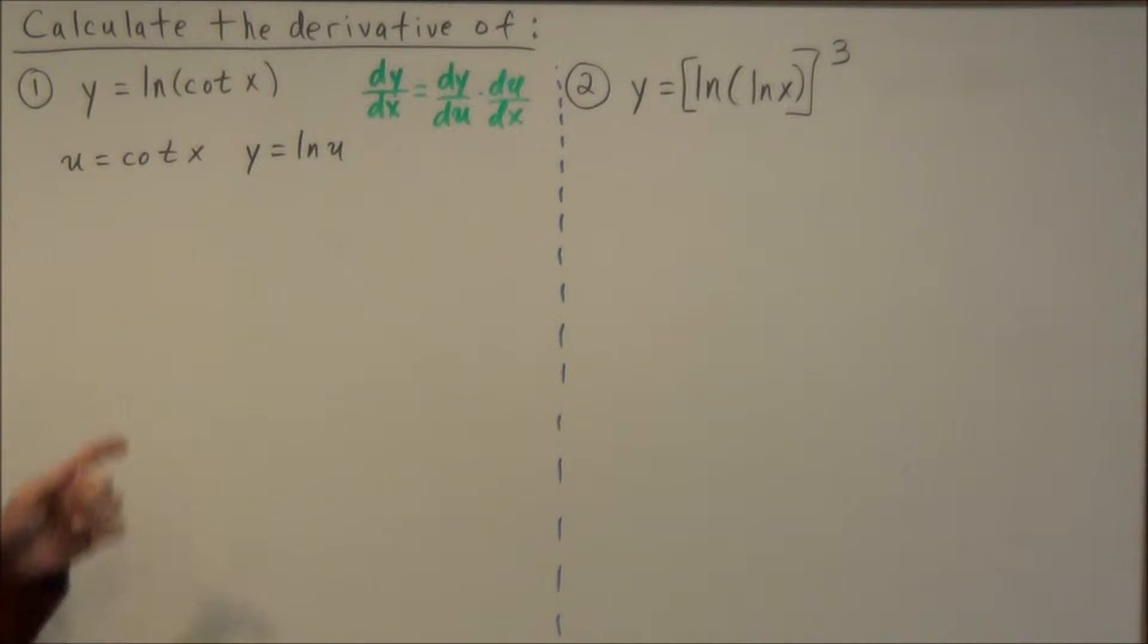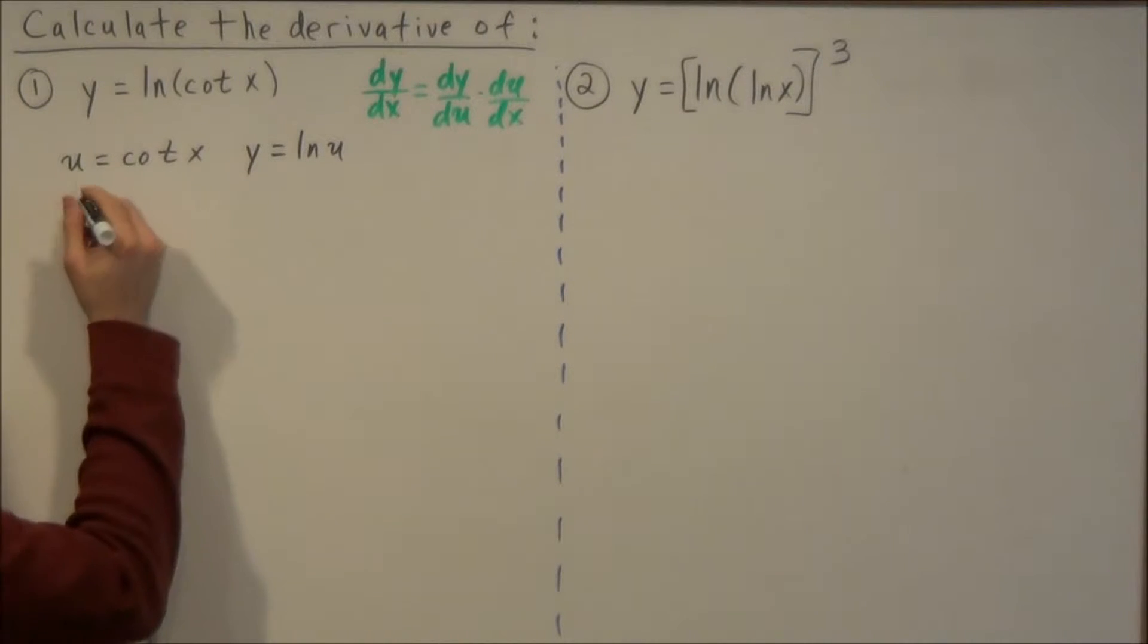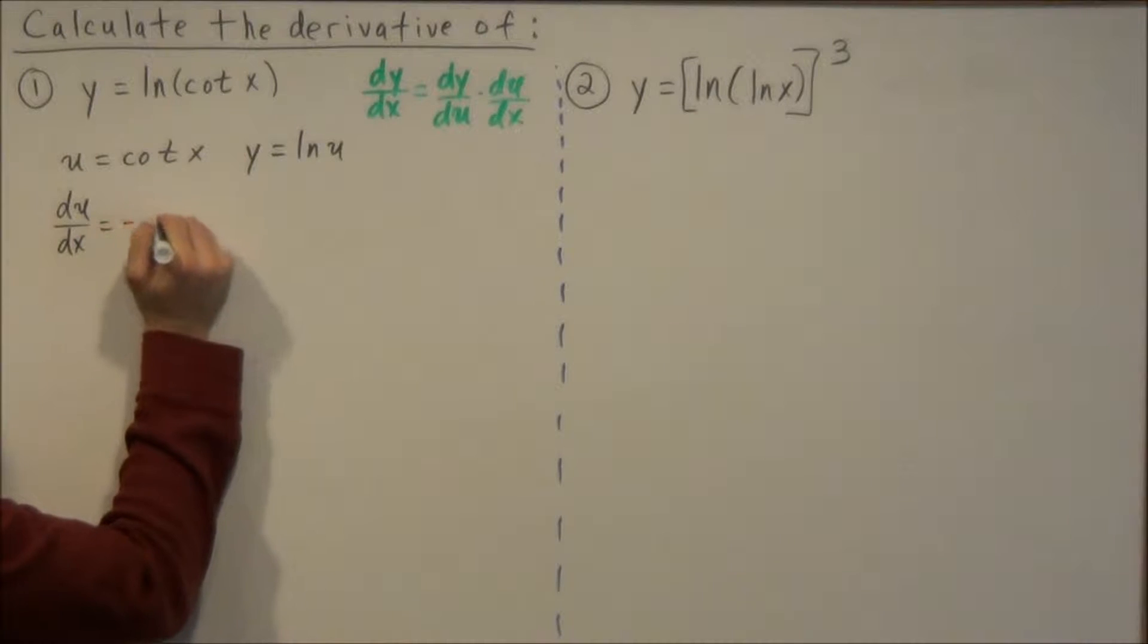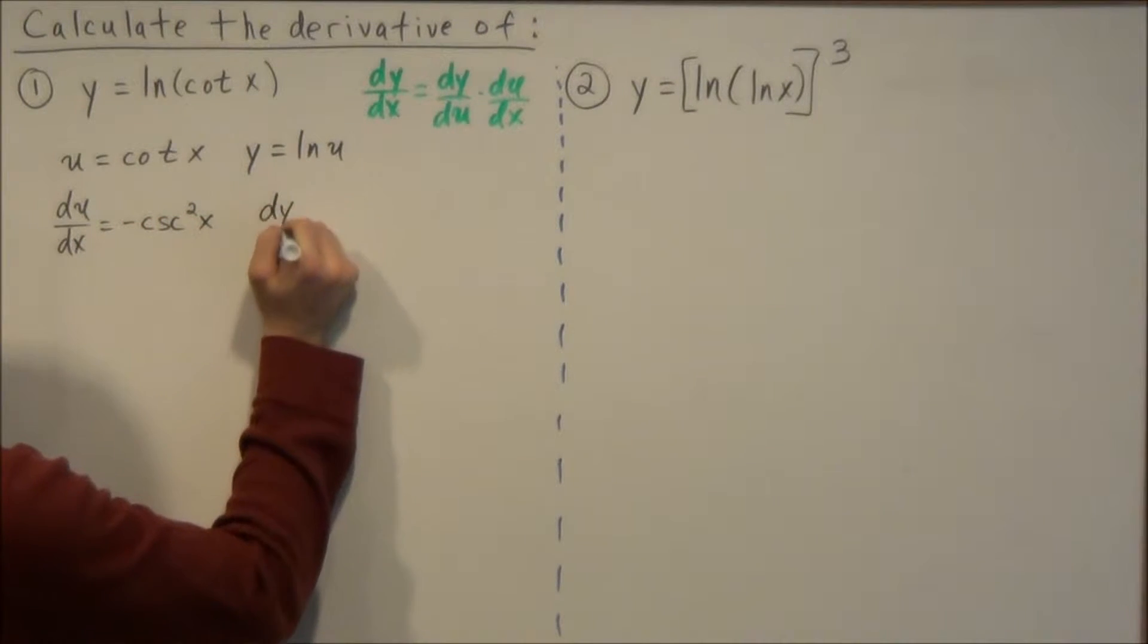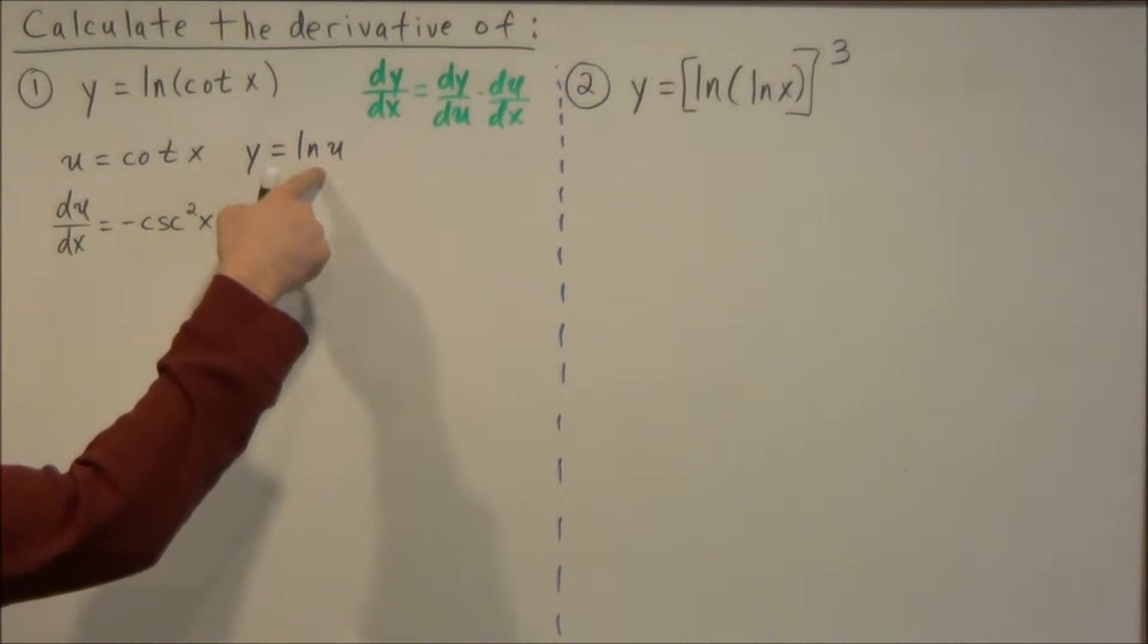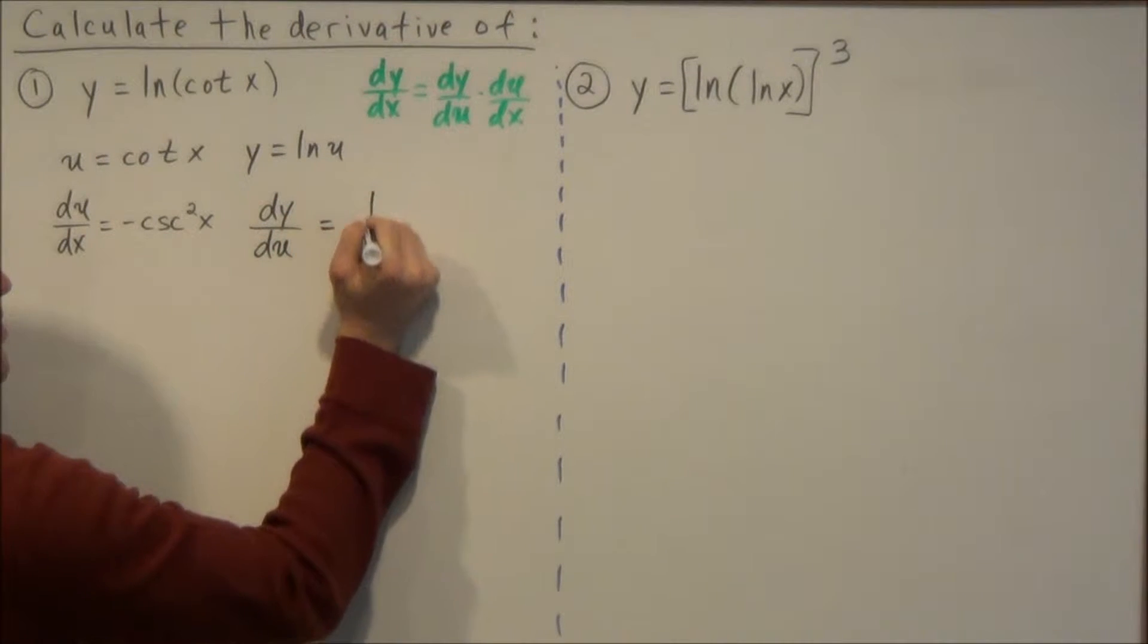So what we're going to do is we're going to calculate du dx, which is negative cosecant squared x, and we're going to calculate dy du. And the derivative of the natural log of u is one over u.